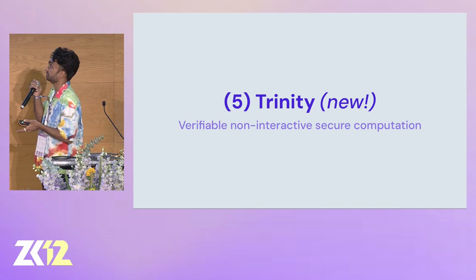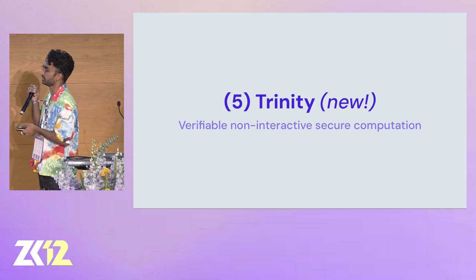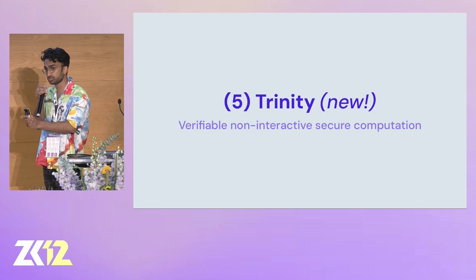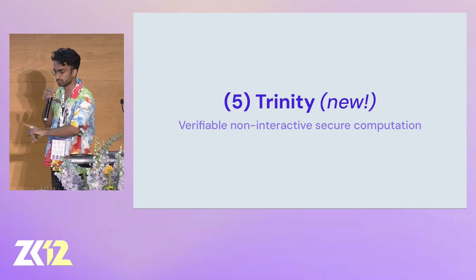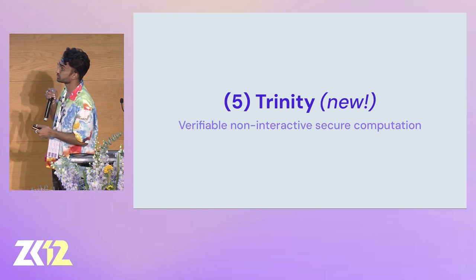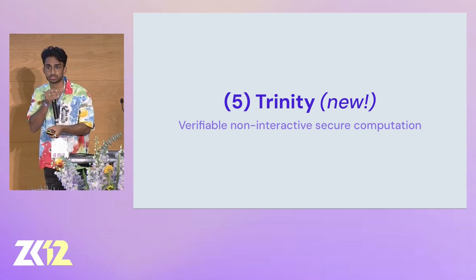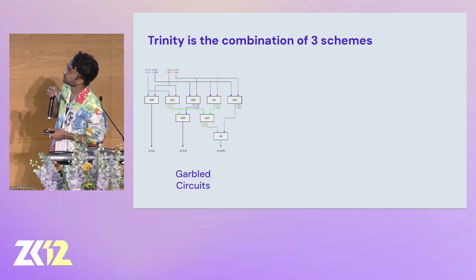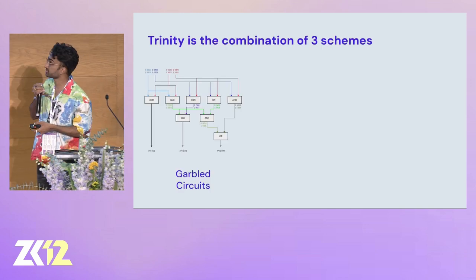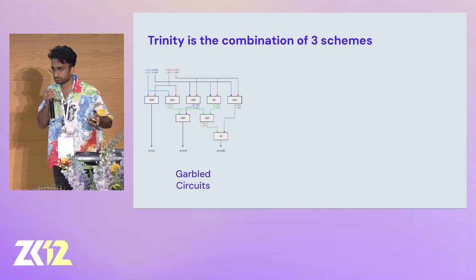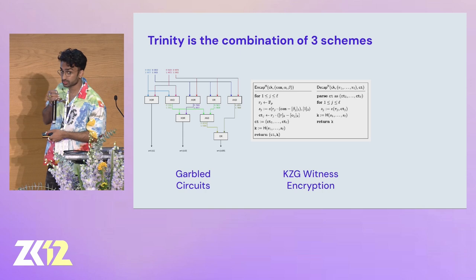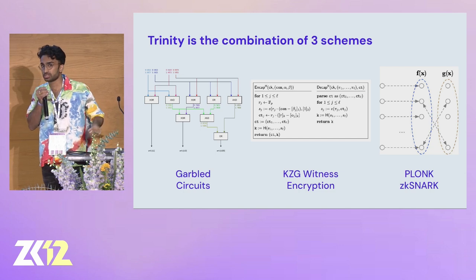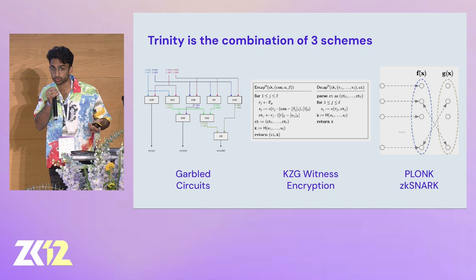Trinity is a scheme we've researched in-house that we think answers a lot of these different requirements. In particular, there's only one round necessary of computation, with one initial pre-processing phase that can be used for many different MPCs. It also comes with verifiability out of the box — you can verify that the inputs going into this multi-party computation correspond to other data. It's called Trinity because it's a combination of three different powerful cryptographic schemes: garbled circuits from Yao in the 80s, KZG witness encryption which is a relatively new result from 2024, and Plonk — or any ZK-SNARK that uses KZG, but we've chosen Plonk because it has great tooling and performance.